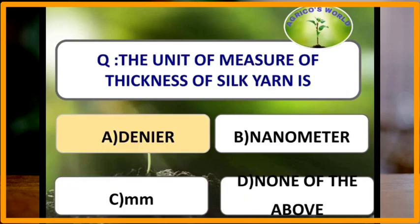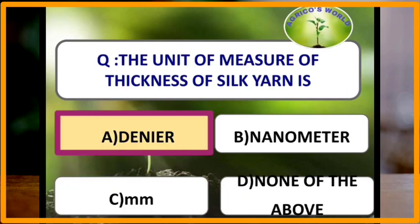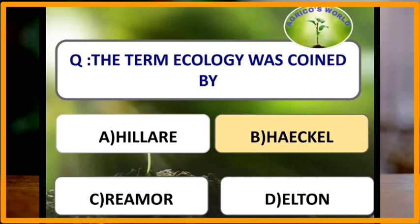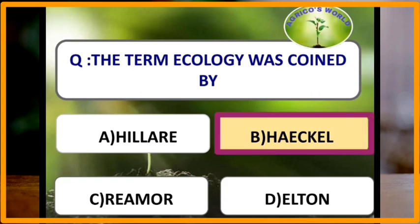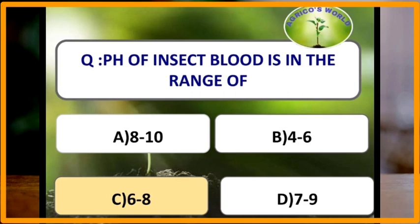The unit of measure of thickness of silk yarn is denier. Denier is a unit to measure the thickness or fineness of silk yarn — the weight of 9000 meters of thread in grams is one denier. The value of denier varies from 1.7 to 2.8 grams. The term ecology was coined by Haeckel. The pH of insect blood is in the range of 6 to 8.